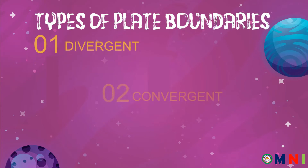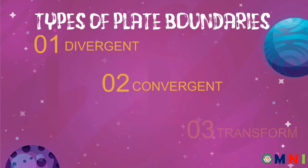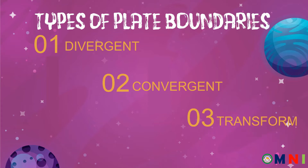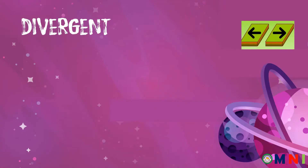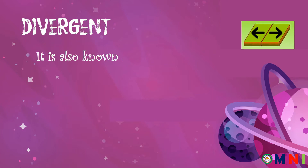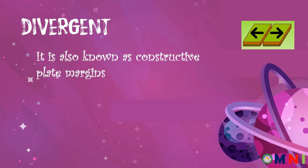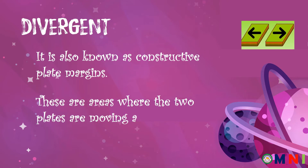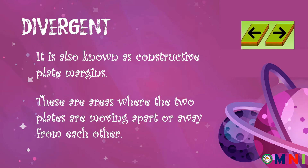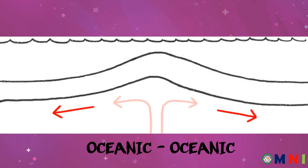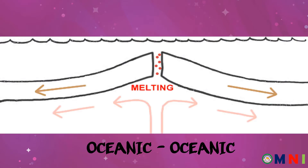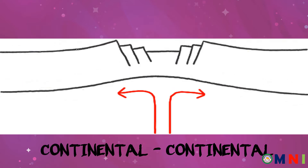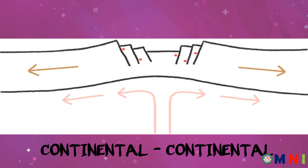We have the divergent, convergent, and transform. Let's start with the divergent plate boundaries. Divergent plate boundaries are also known as constructive plate margins. These are areas where the two plates are moving apart or away from each other. There are two types: the oceanic-oceanic divergent plate boundary and the continental-continental divergent plate boundary.